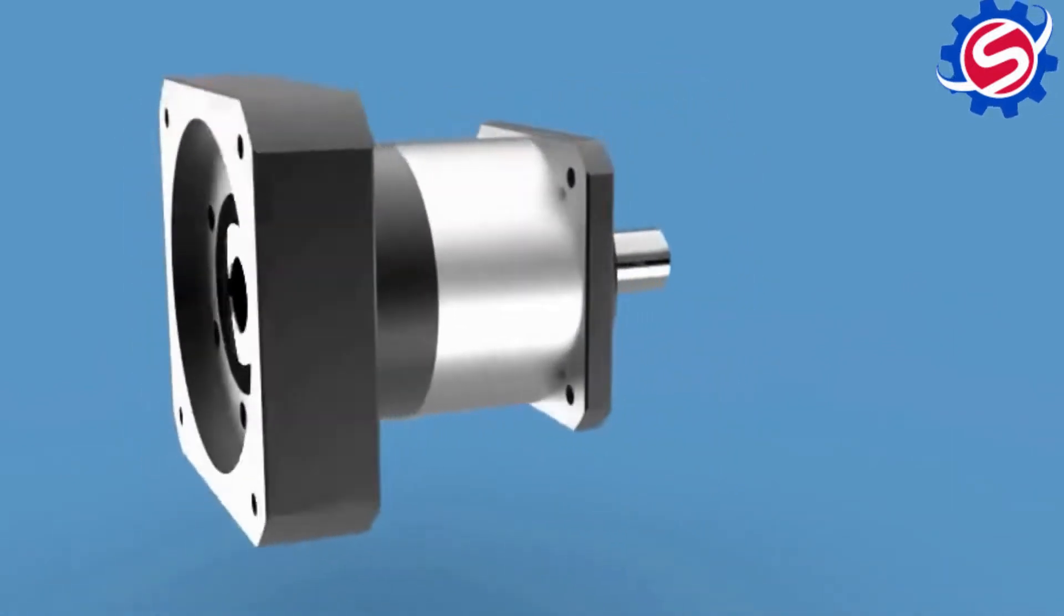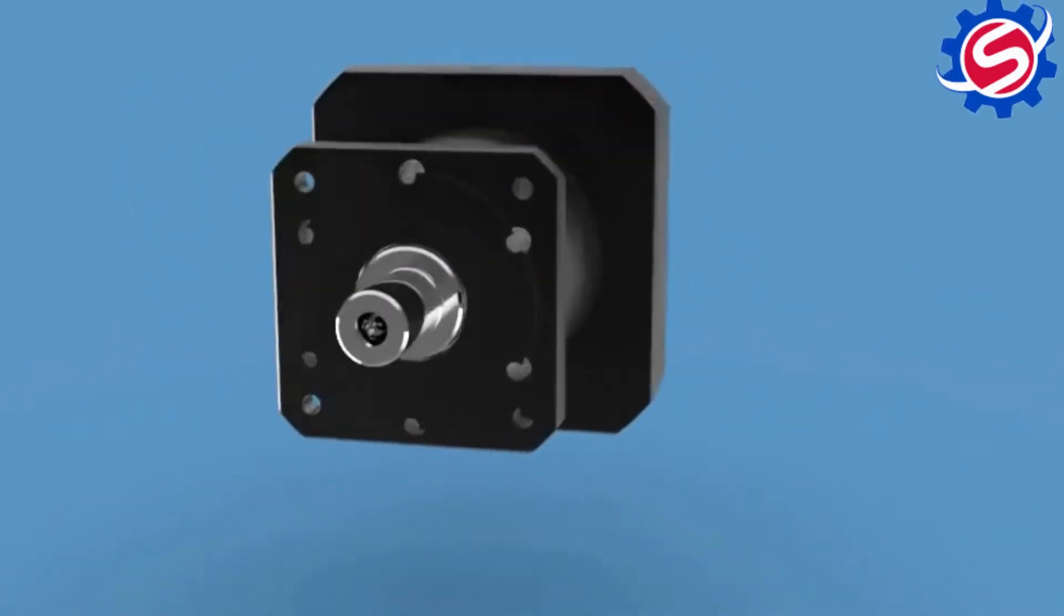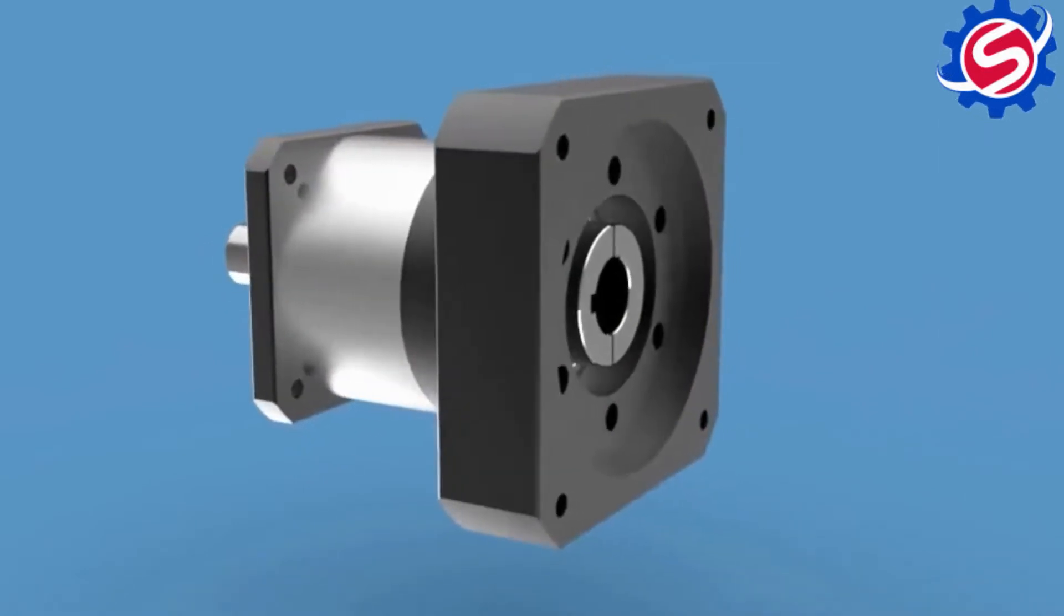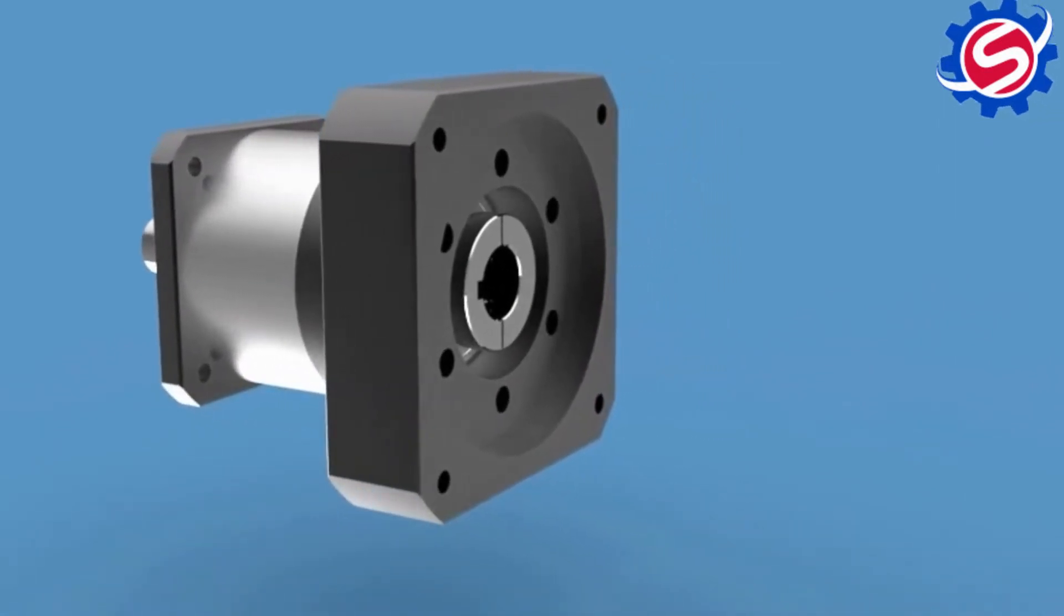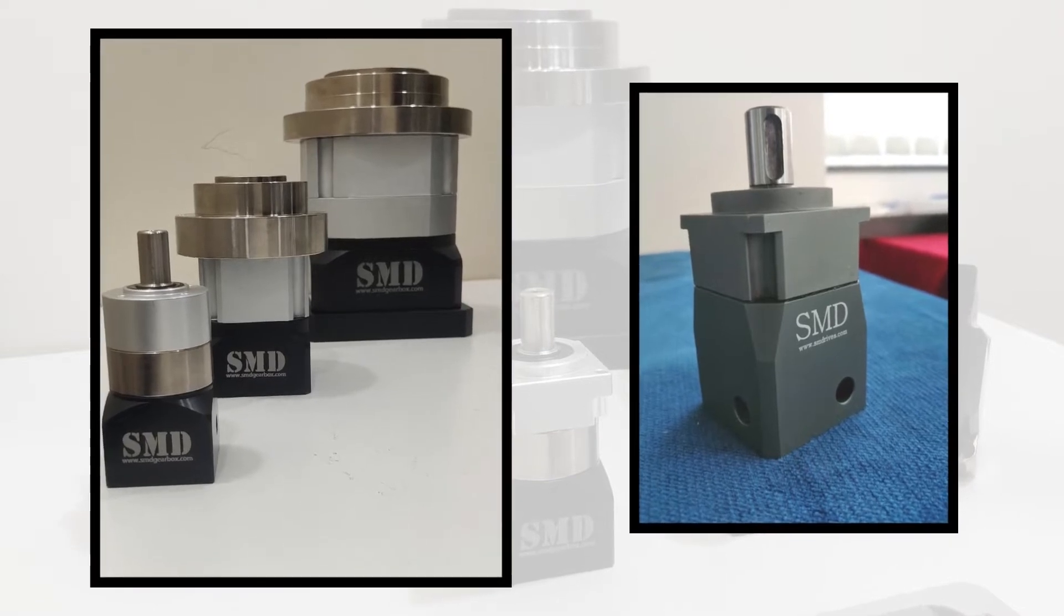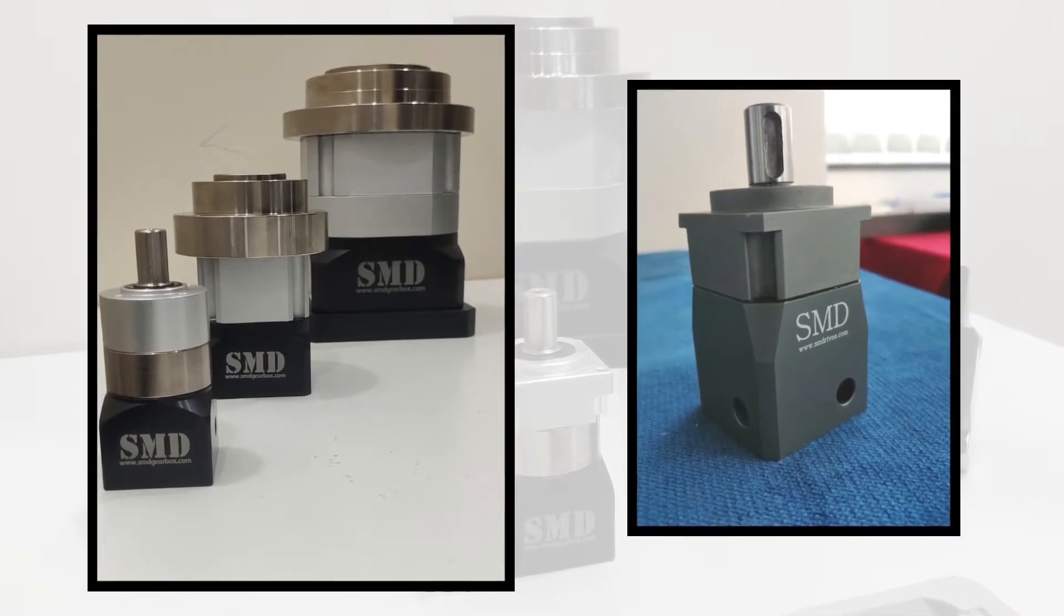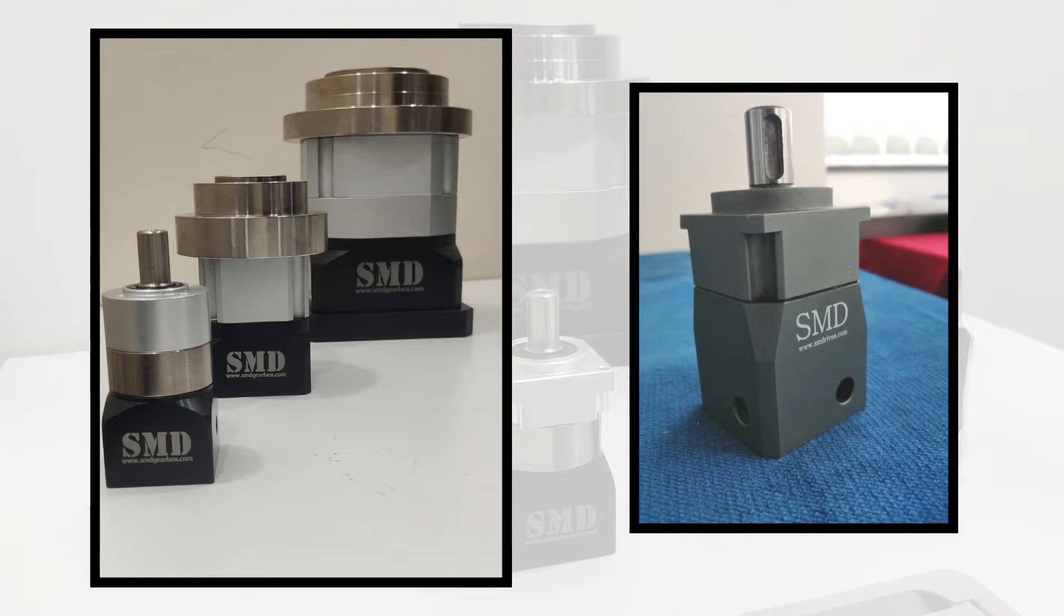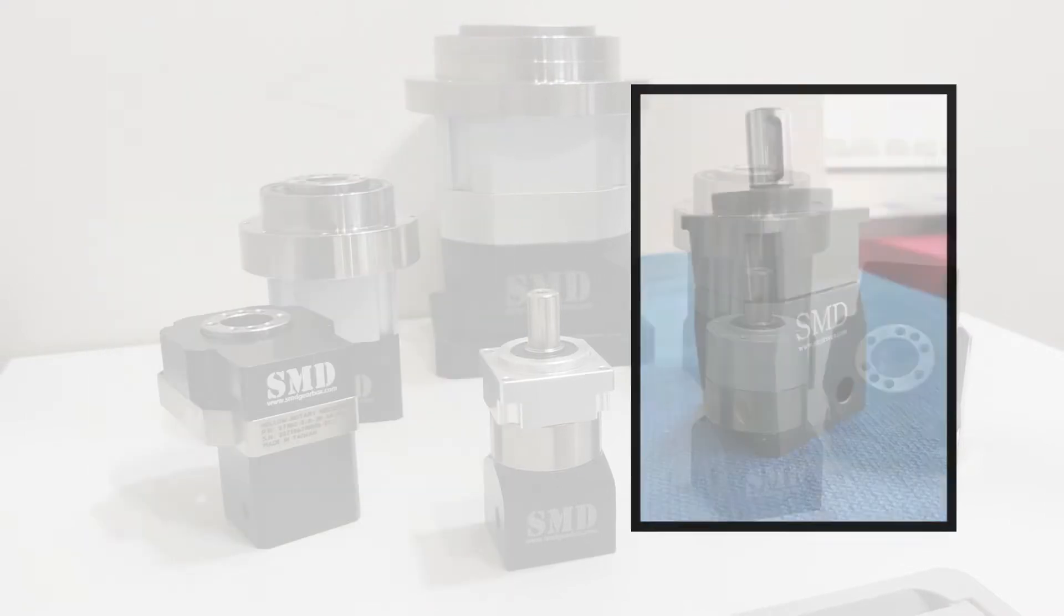You can see a planetary gear reducer with a square flange mounting and size availability ranging from 40 to 220. This gearbox is used to transmit inline motion with reduction and has a torque availability ranging from 17Nm to 2200Nm with a minimum backlash of one arc minute.